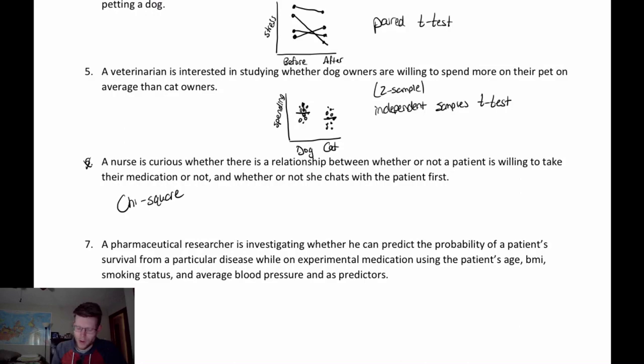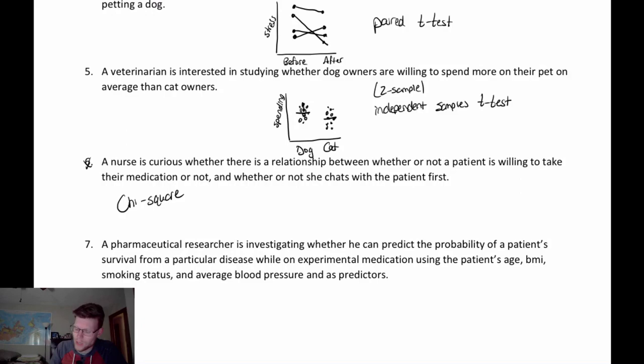The last question: a pharmaceutical researcher wants to predict the probability of a patient's survival from a particular disease while on experimental medication, using the patient's age, BMI, smoking status, and average blood pressure as predictors. We have multiple predictors, and the response variable is the probability of a patient's survival — whether they survive or not. Since the response variable is binary, this calls for logistic regression.